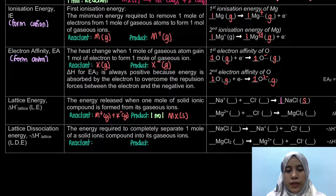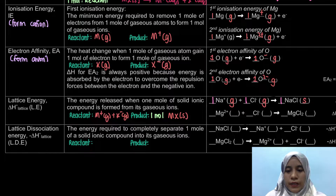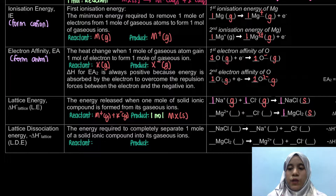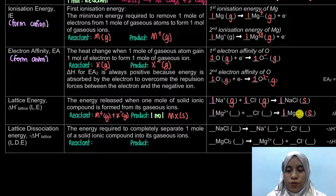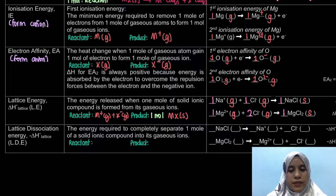For the lattice energy of MgCl₂: one mole of MgCl₂(s) is formed, so the reactants are Mg²⁺(g) and 2Cl⁻(g). Make sure the equation is balanced: Mg²⁺(g) + 2Cl⁻(g) → MgCl₂(s). The ions must be in the gaseous state.